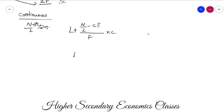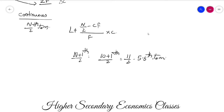I will show you the derivation using (N+1)/2 th item. If we divide 10 items, n equals 10, so n/2 gives the 5th item. If the result is 5.5, then the median equals the 5th item plus the 6th item, divided by 2.